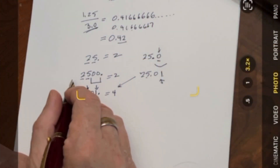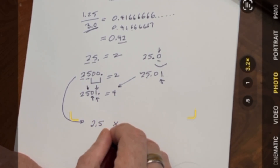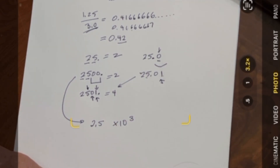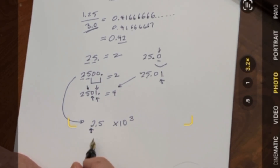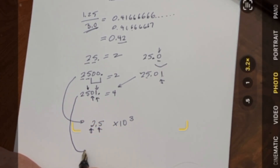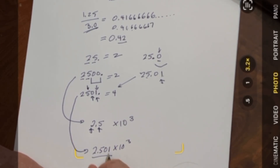We have a nice way to handle this called scientific notation. Take our 2500 — that would be 2.5 times 10 to the 3, which gives us two significant digits. If we want to write 2501 in scientific notation, we write 2.501 times 10 to the 3. You can immediately see that 2500 has two significant digits and 2501 has 4.